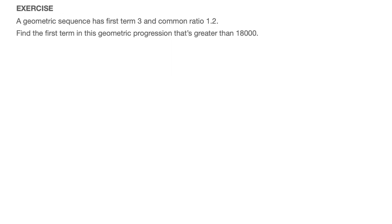So let's see how this is done. First of all, let's make a note of the first term, so the first term U1 equals 3, as well as the common ratio R, which is 1.2.